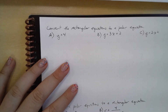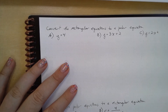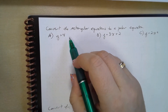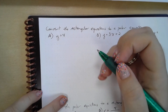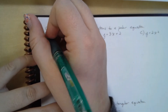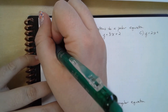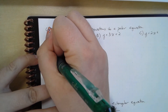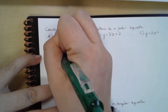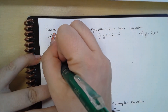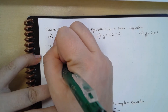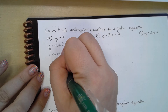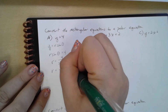Now instead of converting just points, let's convert some full equations. We want to convert the rectangular equation y = 4 to polar. We know that y = r sin(θ), so r sin(θ) = 4. Therefore r = 4/sin(θ), which we can rewrite as 4 csc(θ). And that's the entire polar equation.